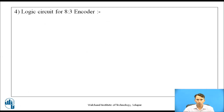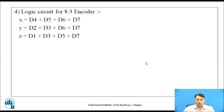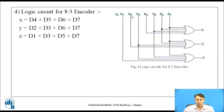The logic circuit for the 8-to-3 encoder is drawn based on the logic equations for x, y, and z. These three equations require OR gates for each output with respect to inputs d0 to d7. The octal inputs d0 to d7 feed into OR gates to produce the binary output bits x, y, z. For example, if d2 is active, meaning octal 2 is present, it is encoded as 0, 1, 0.